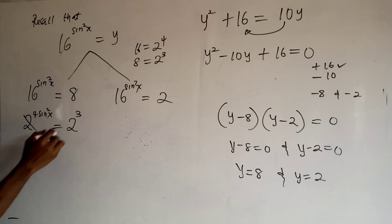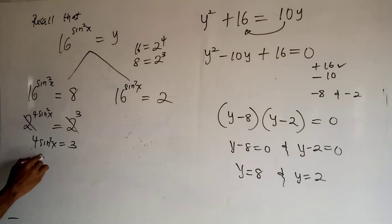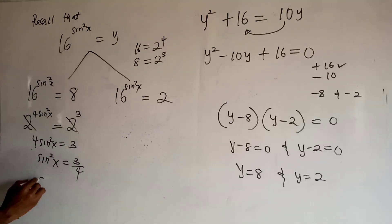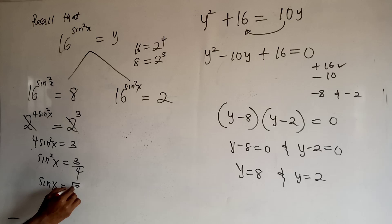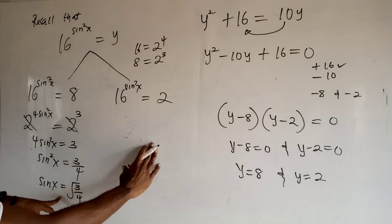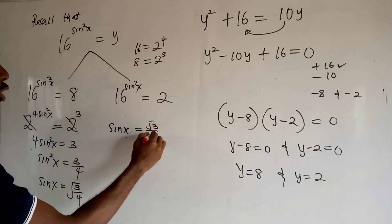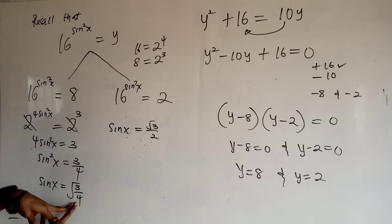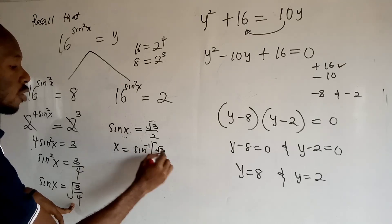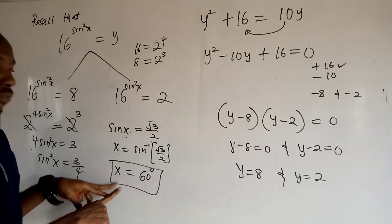Dividing both sides by 4, we get sin squared x equals 3 over 4. Taking the square root of both sides, sin x equals the square root of 3 over 4, which simplifies to sin x equals root 3 over 2, since the square root of 4 is 2. Therefore x equals the inverse sine of root 3 over 2, which gives x equals 60 degrees. This is the first value of x.